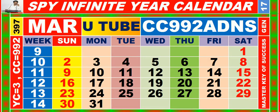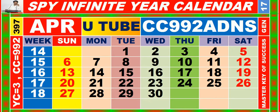Calendar for the month of March, having calendar code equal to 9-9-2. Calendar for the month of April, having calendar code equal to 9-9-2.